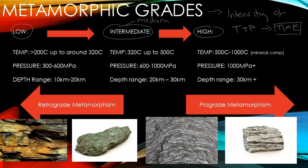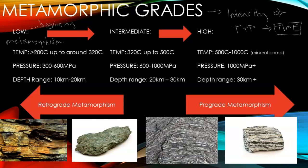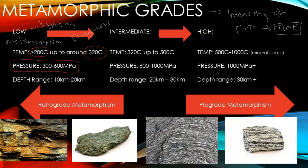Low metamorphic grade is the lowest temperature and the starting point for metamorphism. This begins after what's called diagenesis. Once the depth or the temperature or the burial of the rock gets to over 200 degrees Celsius, up to about 320 degrees Celsius, you start to have this low grade metamorphism changing the rock into its first stage. The pressure is twinned with temperature, around 300 to 600 megapascals, and the average depth range is 10 to 20 kilometers.